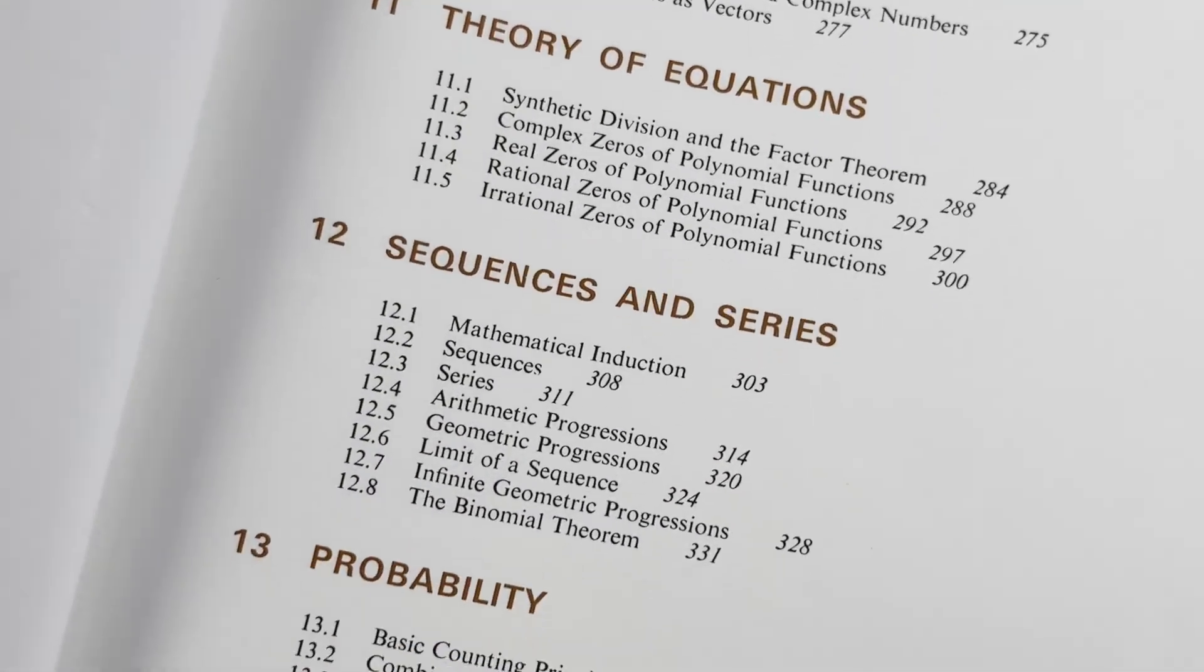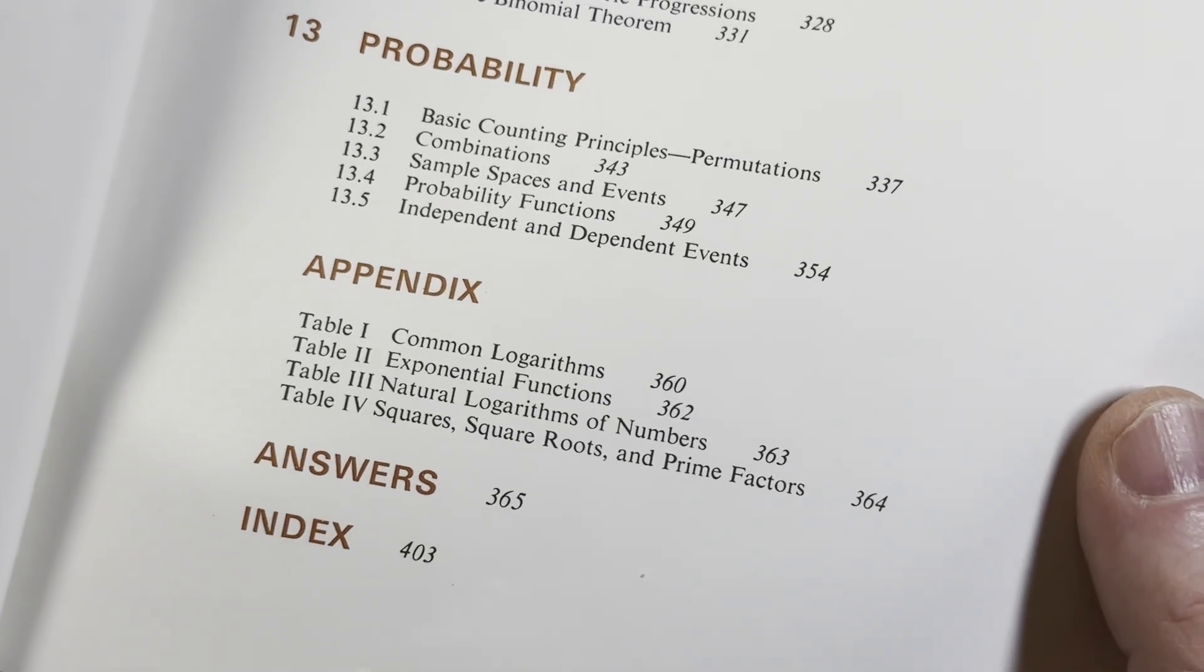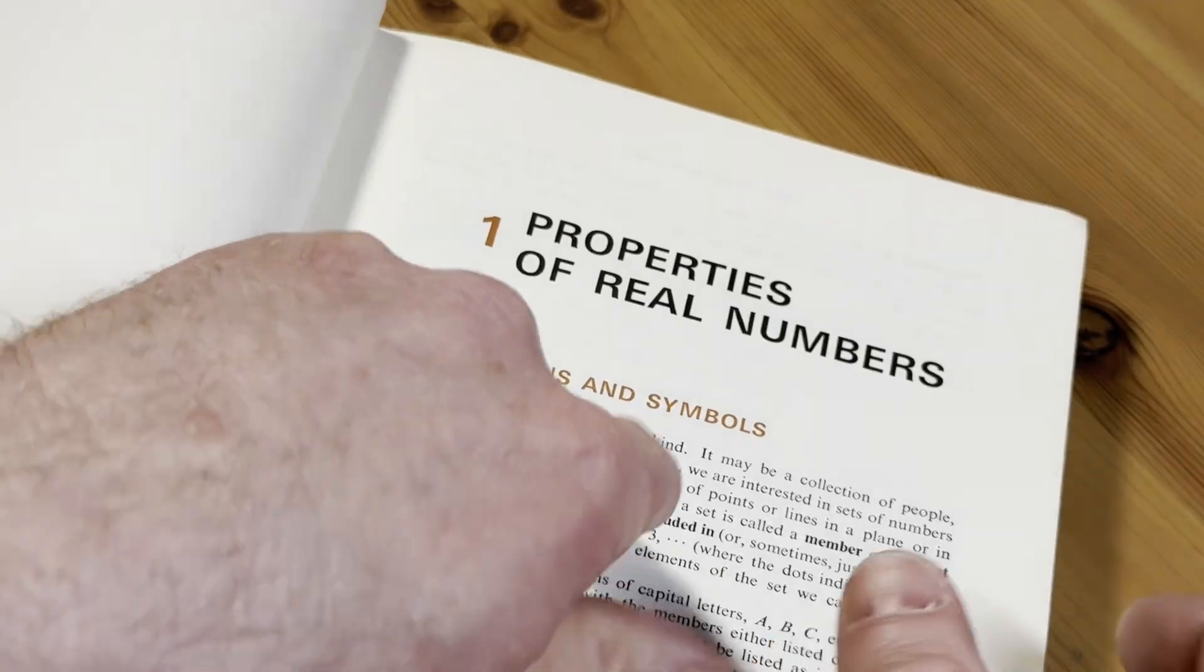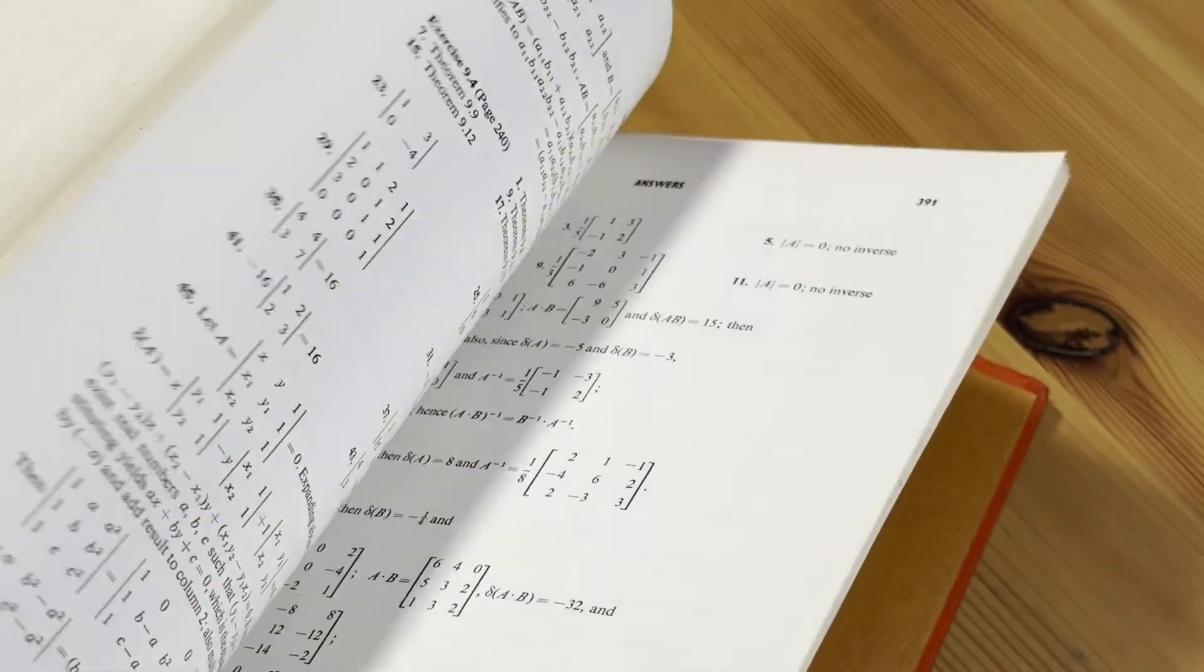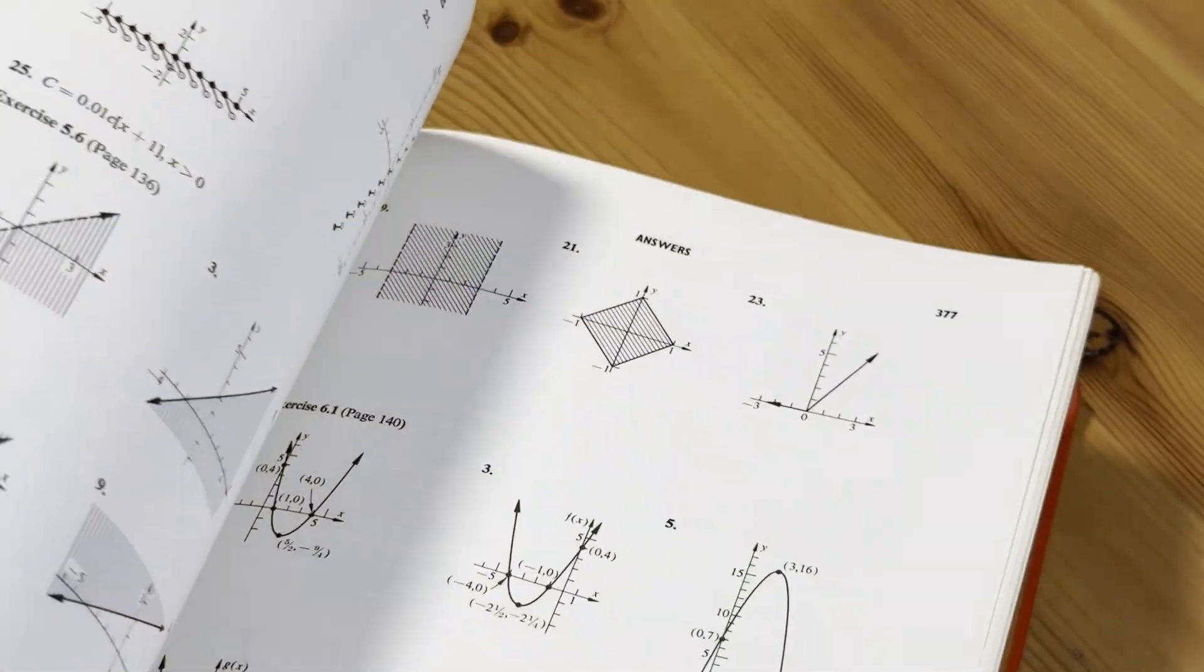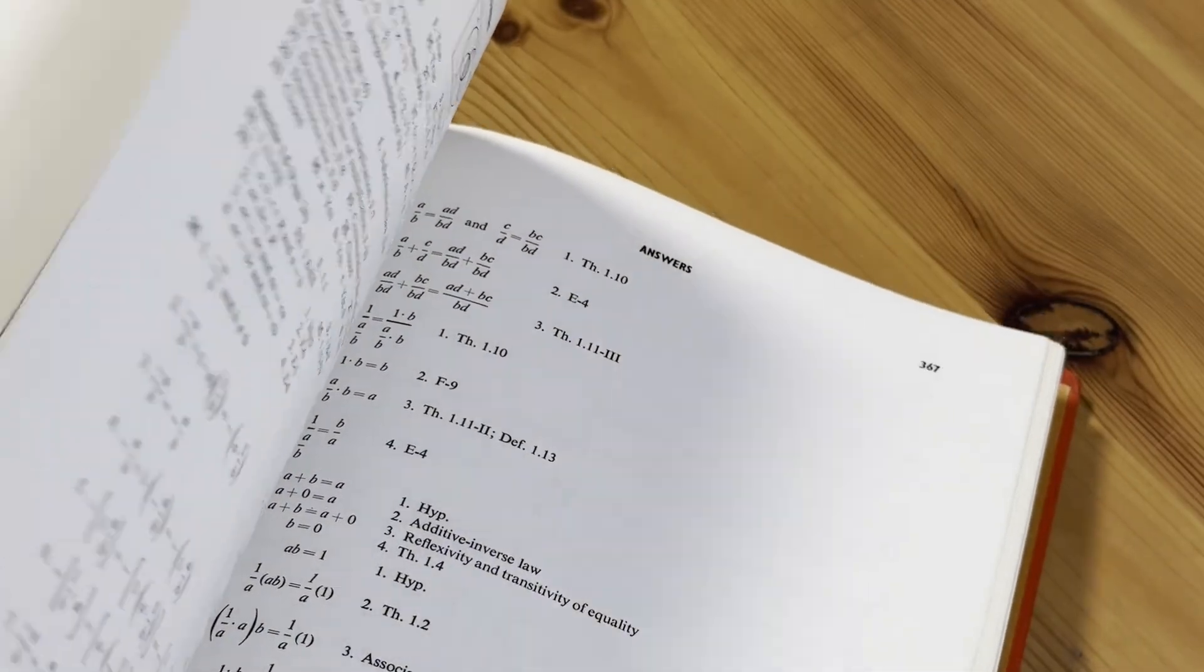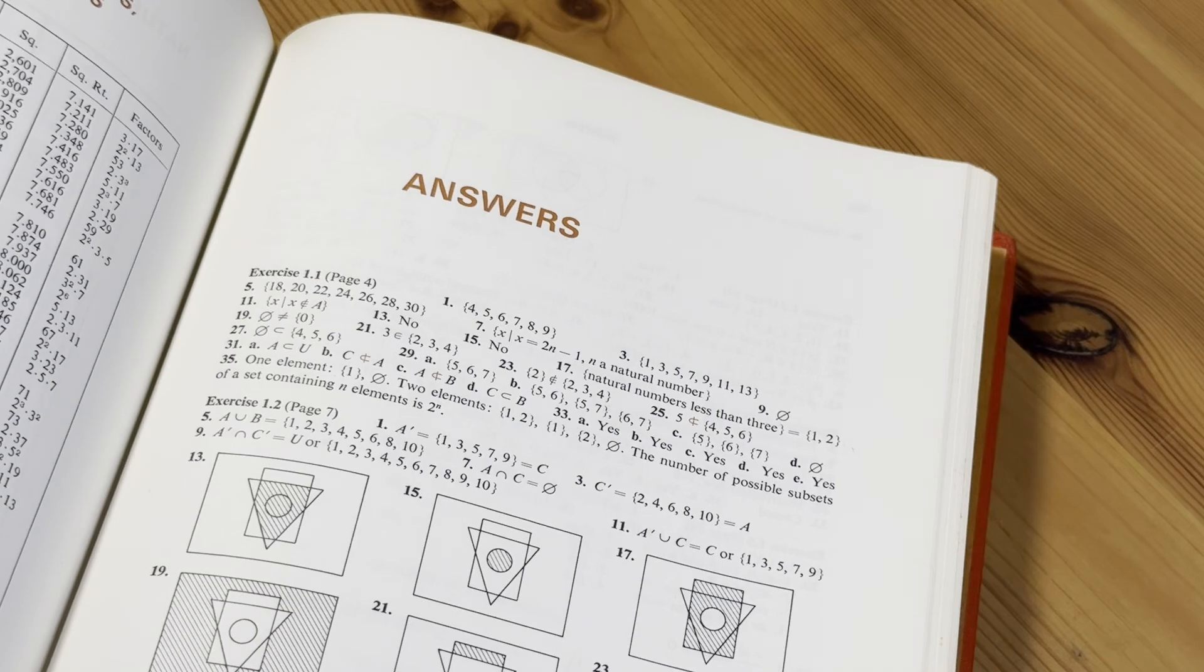Theory of equations. Sequences and series. That's fun. Probability. Then there's some appendices. And then you have answers. Let's go straight to the answers, just so we can see what they mean by answers, because it depends on the book and the edition. Oh, I could smell the book from here. It's just, wow.